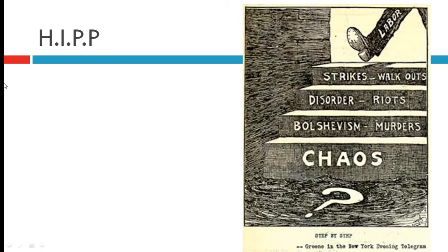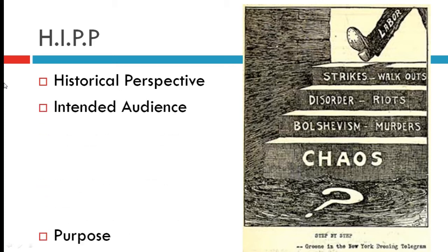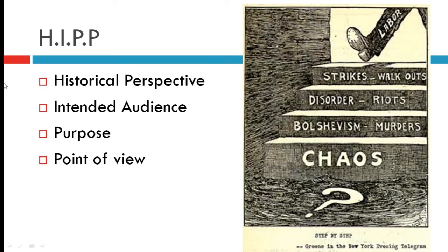We've been evaluating primary sources and political cartoons all year. From here on out I'd like to use the acronym HIP: Historical perspective, Intended audience, Purpose, and Point of view. Historical perspective looks at where something sits in history and its significance. Intended audience is exactly what it sounds like. Purpose asks why this person created the cartoon for that audience and what they hoped to accomplish. Point of view asks what perspective the cartoon represents and what influences shape it. Feel free to pause and try defining this yourself before the next slide.